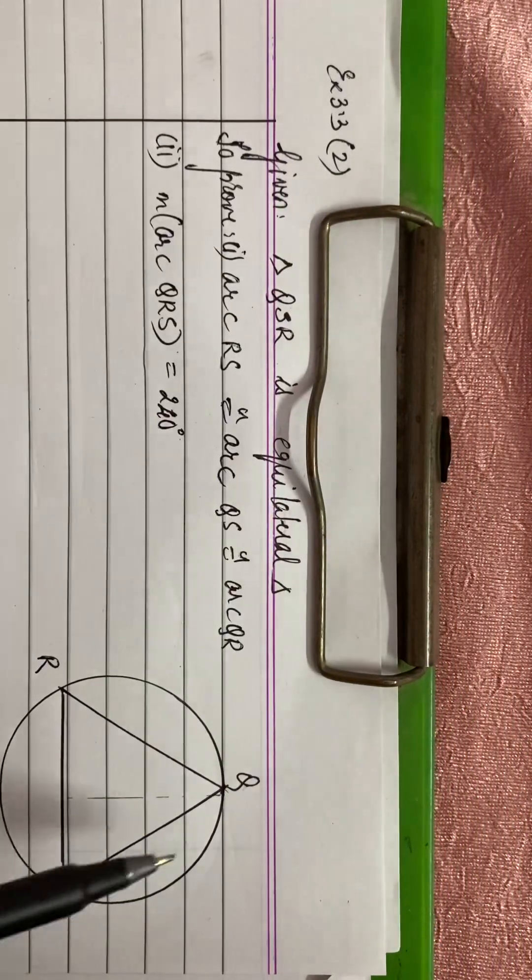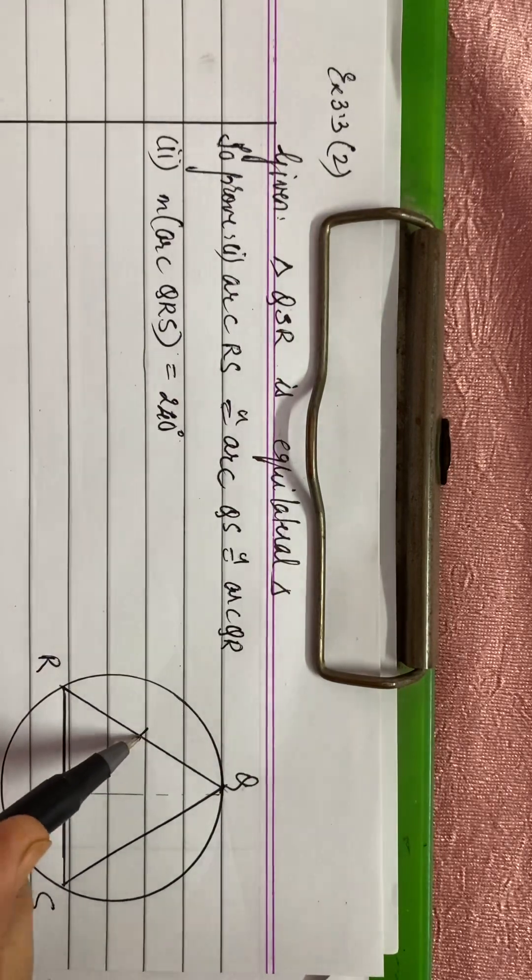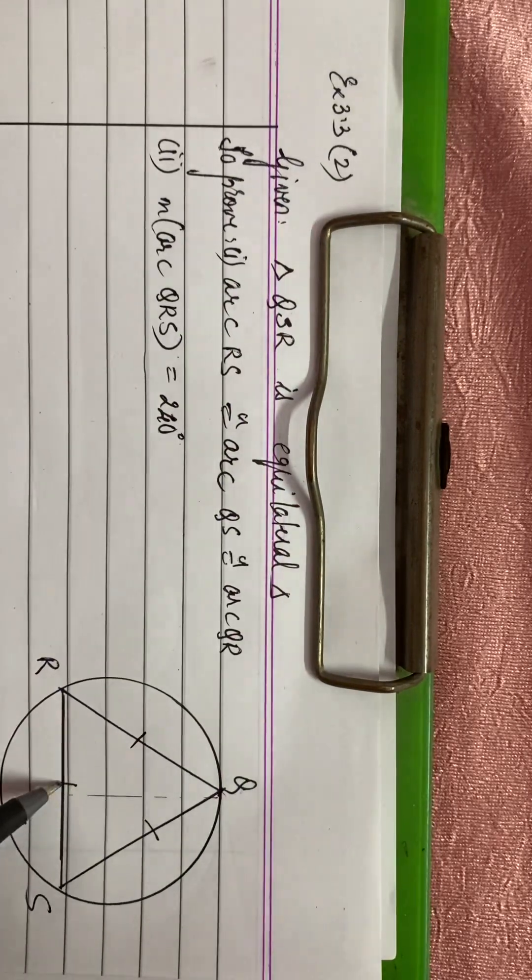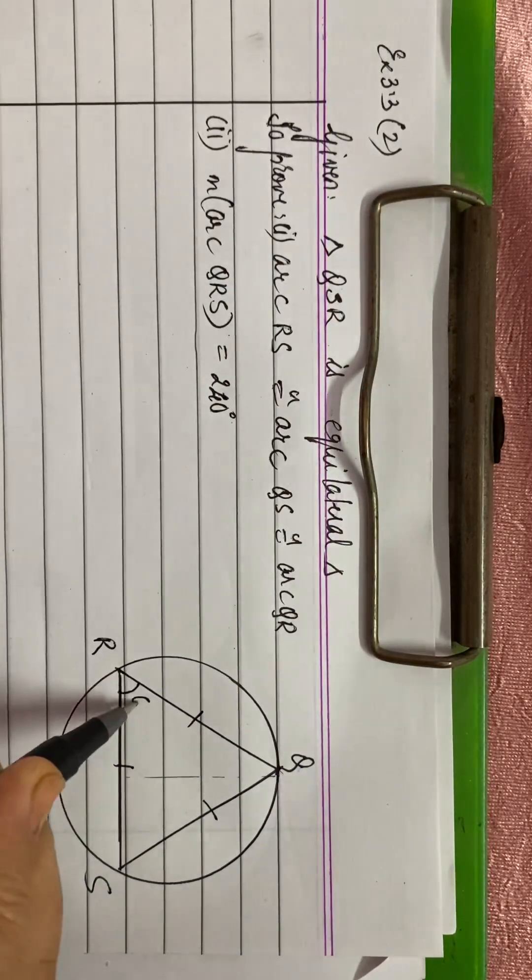Now, in this sum, we are given that triangle QRS is an equilateral triangle. If it is an equilateral triangle, then all three sides are equal. And each angle will be how much? 60 degrees.